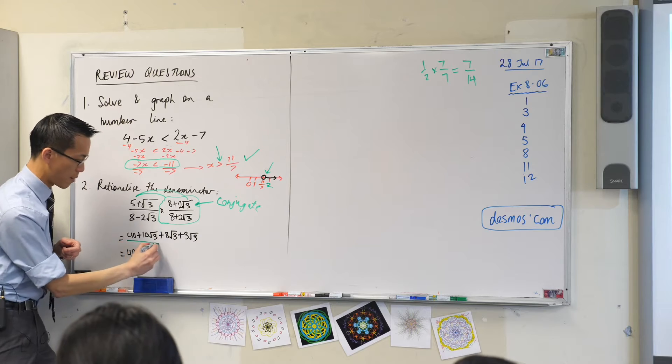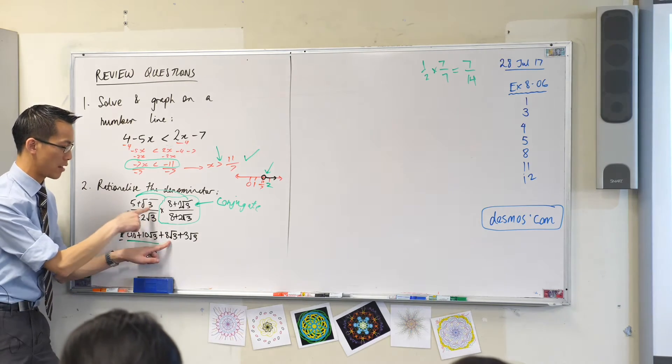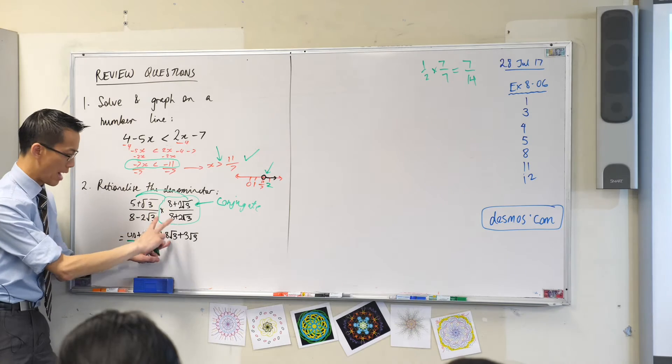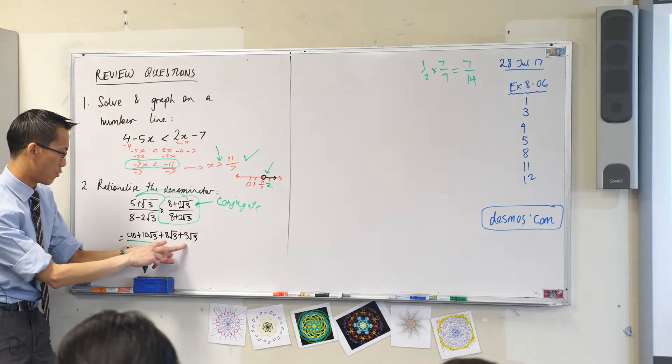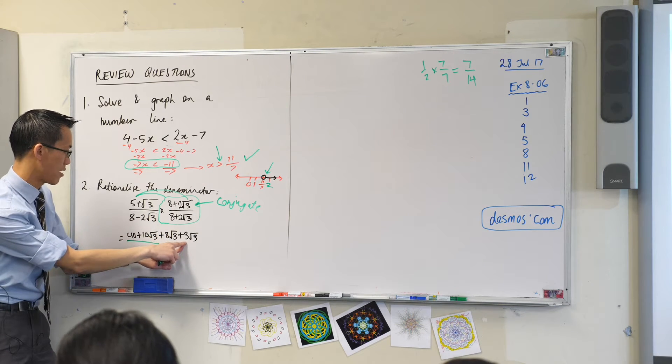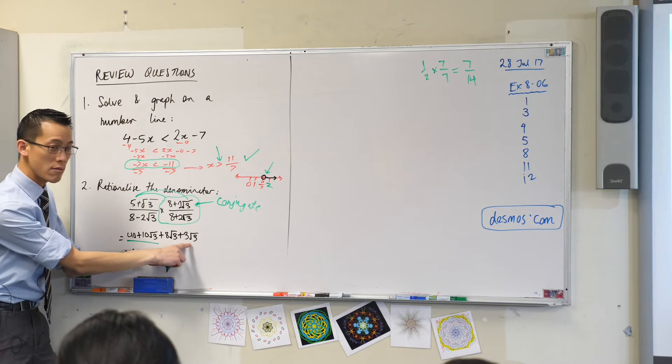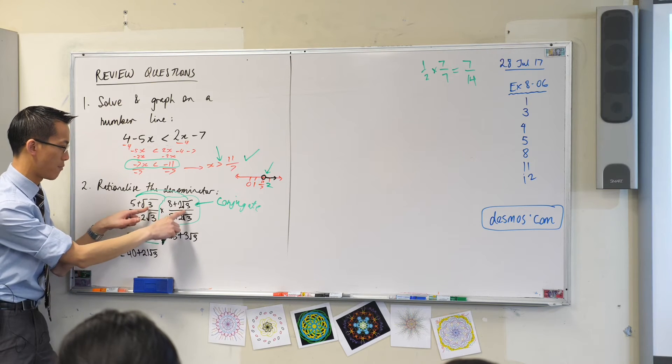So here's one of the pairs, the first one. And from there, you can see where 8 root 3 comes from. You see it? And you can also see where, what is that? Is that 3 root 3? Okay, so 3 root 3 should come from this pair.